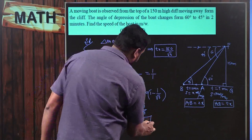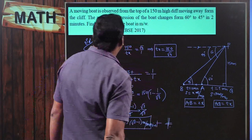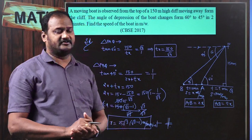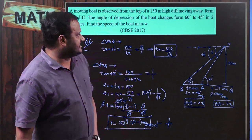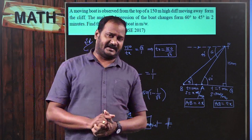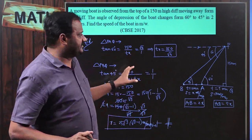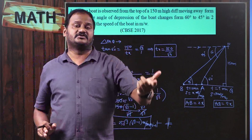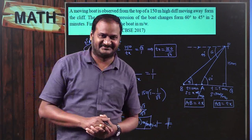The speed of the boat is 25√3(√3 − 1) meters per minute. On the whole, in this topic, the figure is very important, as is identifying the relevant information and the correct trigonometric ratio to use — these play a major role. Hope you understand. Enjoy the class, thank you.